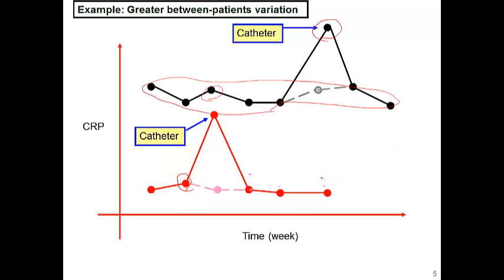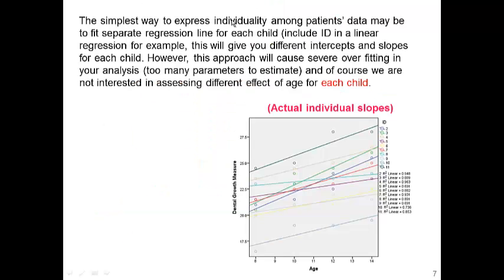So using random effects, the goal in today's lecture is to think about how we can introduce the difference between patients so that we can remove between-patient variation, and the analysis can focus on what happens within the patient. The simplest way to express between-patient variation — patient individuality — is to fit separate regression lines for each child, which we can do by including ID in the linear regression. This gives different intercepts and slopes for each child.